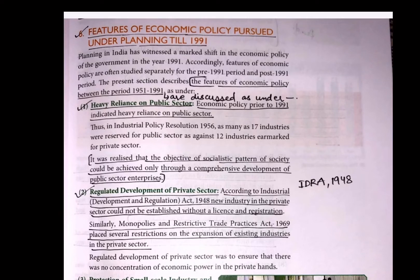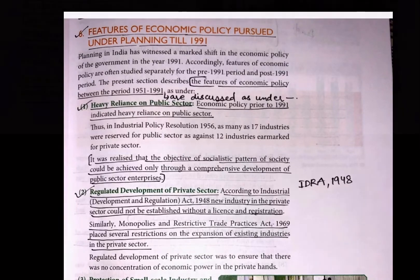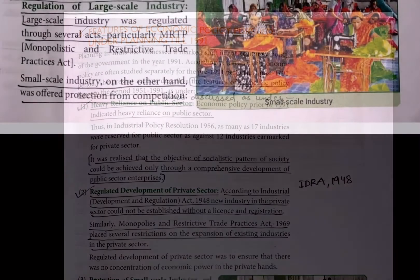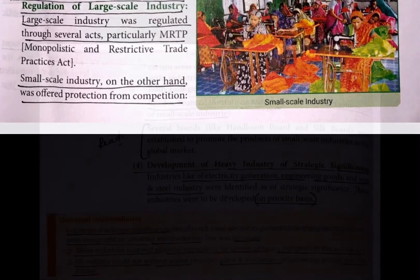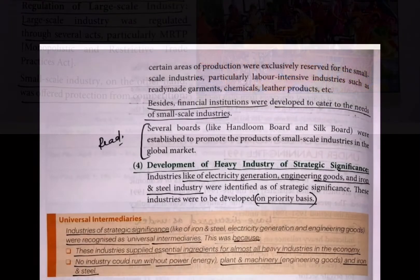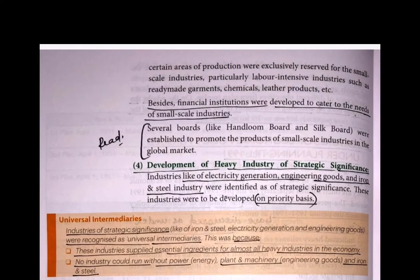They wanted regulated development of the private sector. Acts like IDRA, launched in 1948, completely wanted the private sector to be limited. There was also protection of small-scale industry and regulation of large-scale industry through the MRTP Act — the Monopolies and Restrictive Trade Practices Act. Additionally, they wanted to develop heavy industries of strategic importance on a priority basis.